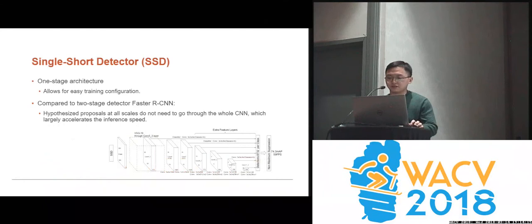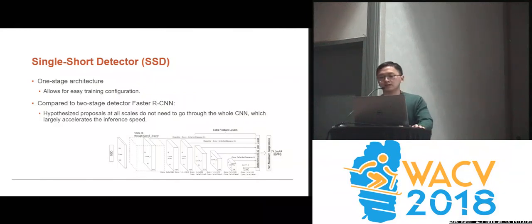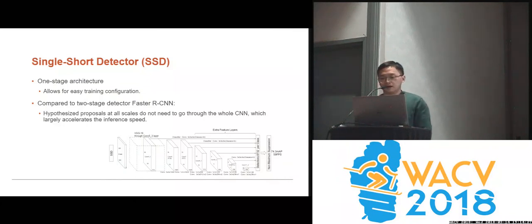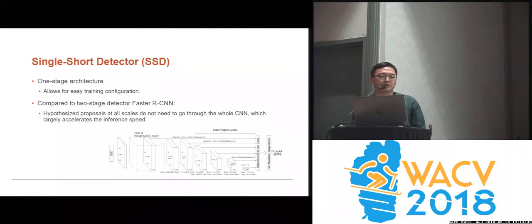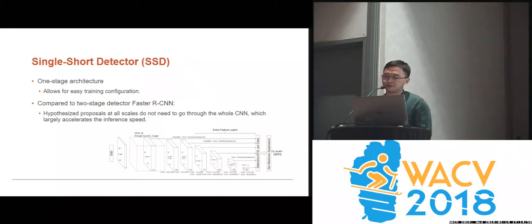Previously, we studied the prior works of the deep learning-based methods in object detection. Particularly, we studied the methods with one-stage architecture, SSD, which is short for Single Shot Detector. Compared to the previous two-stage detectors like the most popular Faster RCNN, SSD has the advantage of real-time performance with comparable accuracy. This is because all the hypothesized proposals at all scales in SSD do not need to go through the whole pipeline, which largely accelerates the inference speed.